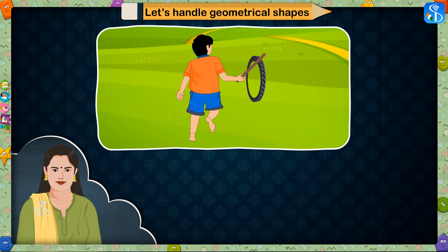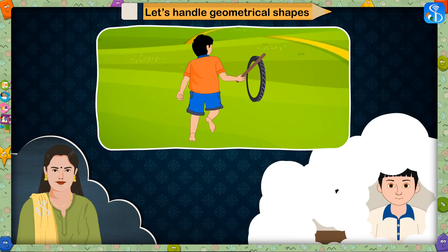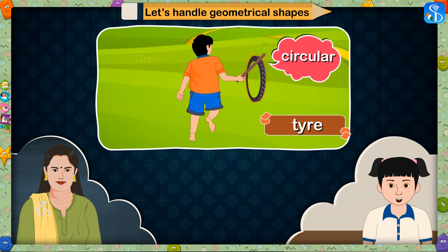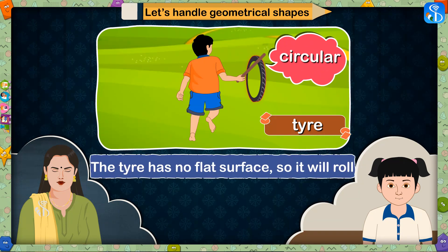Look at the second picture. Which object do you see in it? What shape is it? The second picture shows a tyre. It is circular in shape. Correct! The tyre has no flat surface so it will roll.